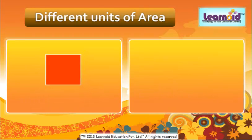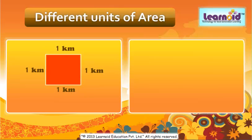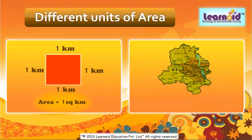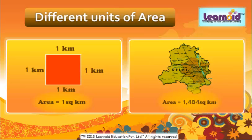Area of a square with one kilometer sides is a square kilometer. For example, area of Delhi is about 1484 square kilometers.